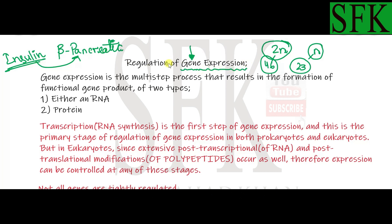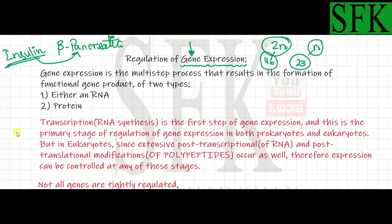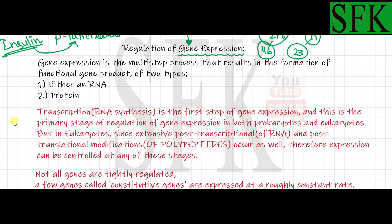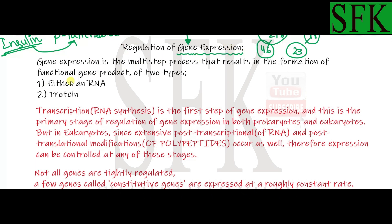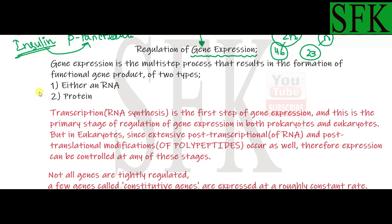So how is gene expression regulated in different cells of the body? Regulation of gene expression is to control whether a gene should be expressed or not in a particular cell. Gene expression is a multi-step process that results in the formation of a functional product. The functional product can be either an RNA — in our discussion we will focus on the mRNA, the messenger RNA, which is produced after transcription.